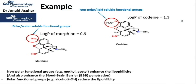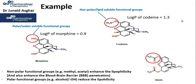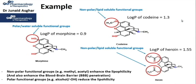Codeine's log P is 1.3. Addition of two acetyl groups produces heroin, which further increases blood-brain barrier permeation. The log P of heroin is 1.55, giving it the highest BBB penetration of the three drugs. This is why heroin is so highly lipophilic with very high permeability through the blood-brain barrier and is considered one of the most addicting substances known.